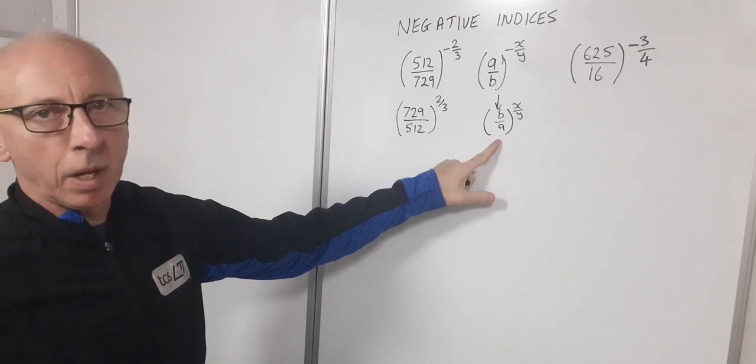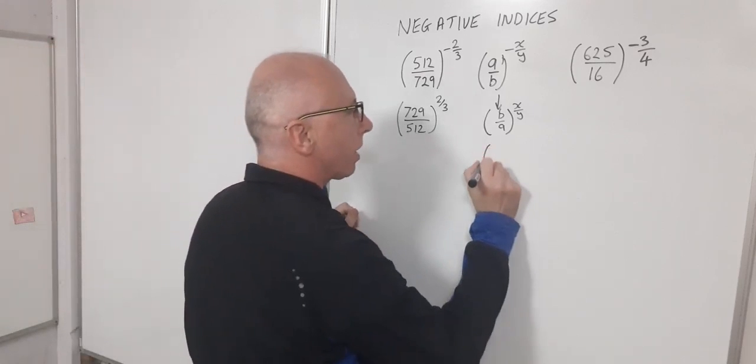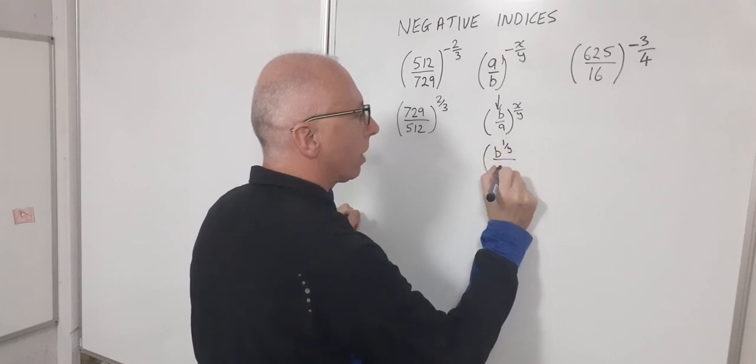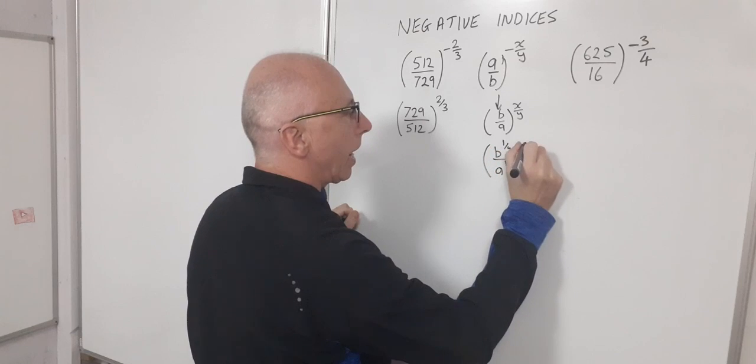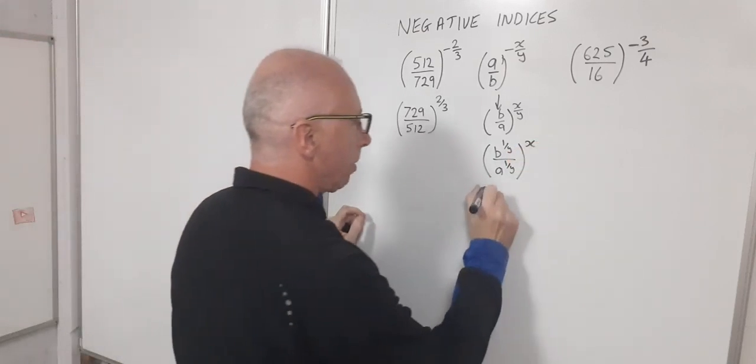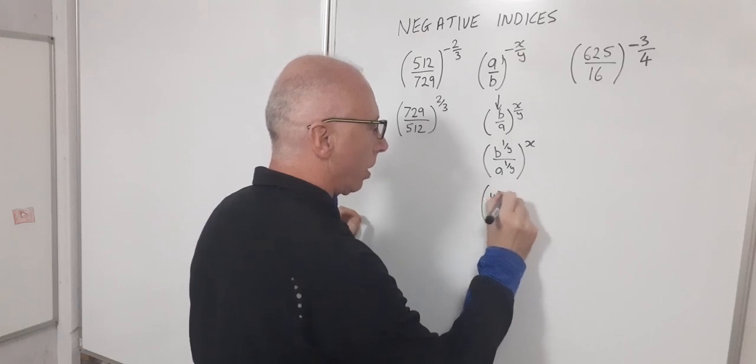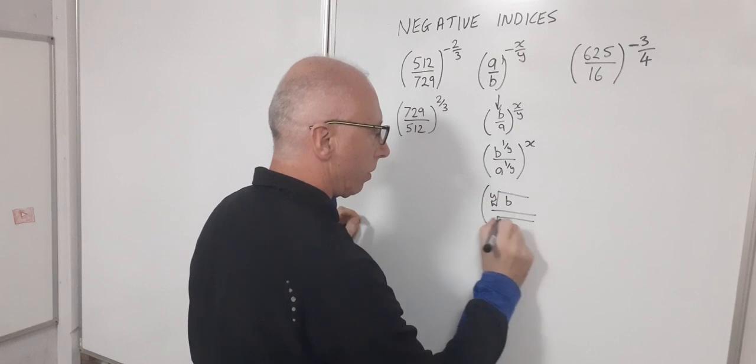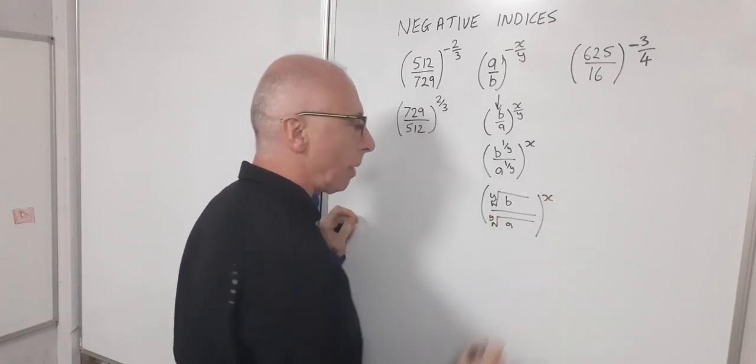Well we could take this apart here as our general example and we could write this as b to the power of one over y divided by a to the one over y, and that's still raised to the x, and that is also the same as writing this as the yth root of b divided by the yth root of a and raising all that to the power of x.